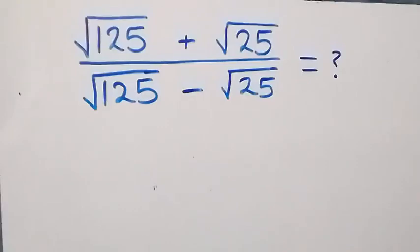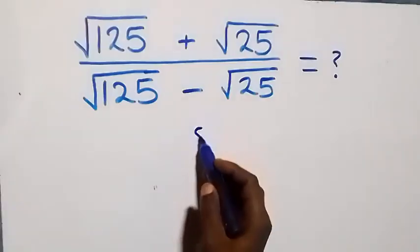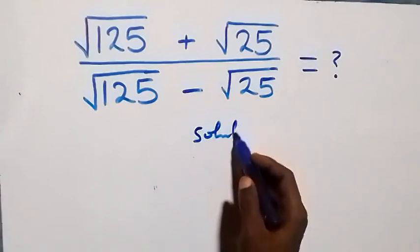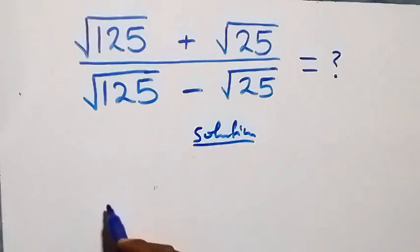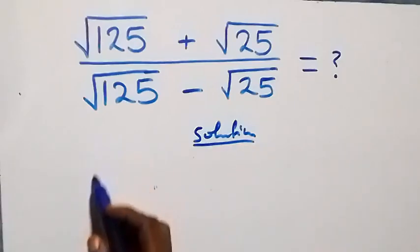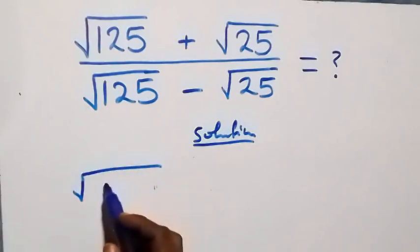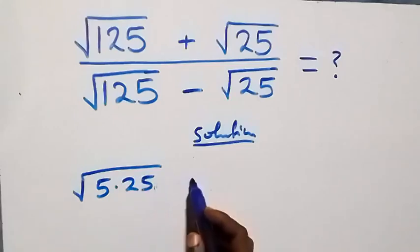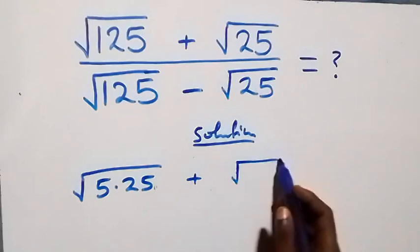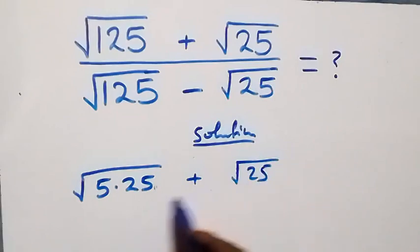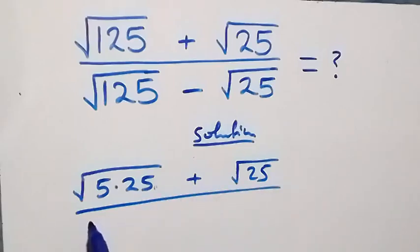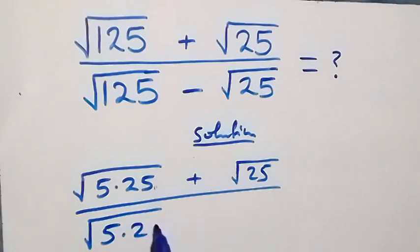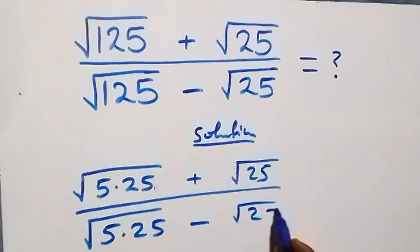Hello, you are welcome. How to solve this nice square root problem. In the first method, this problem can be written as square root of 5 times 25, then plus root 25 divided by root 5 times 25, then minus root 25.